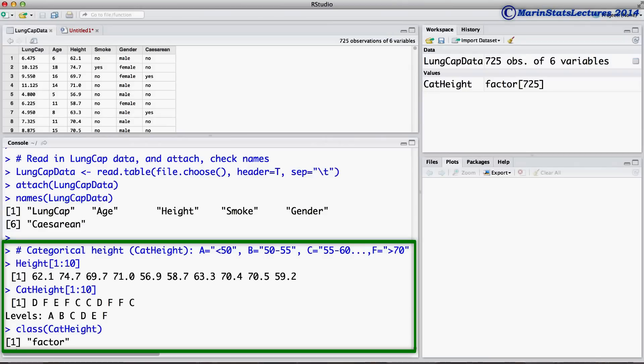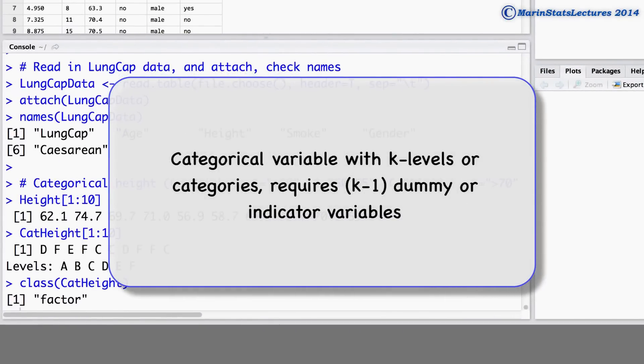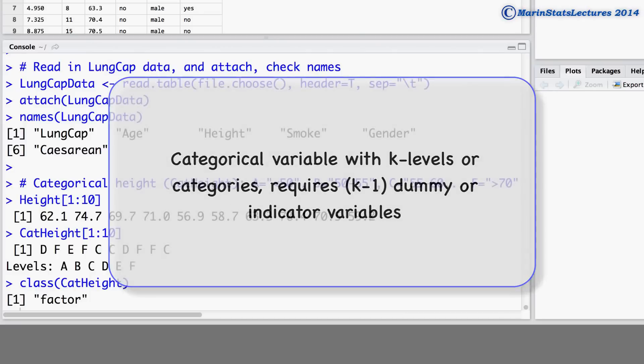Individuals are placed into height categories where category A is less than 50 inches, category B is 50 to 55, category C is 55 to 60, and so on all the way up to category F, 70 or greater. A categorical variable that has k levels or categories requires k minus 1 dummy or indicator variables to represent it.